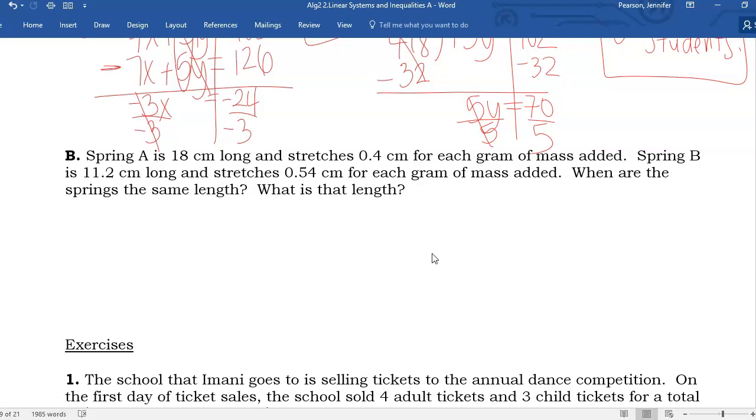This reads Y equals MX plus B because we have a starting number and we have a rate of change. For spring A, I think I'll just go X and Y again. You can do like M for mass and S for spring or L for length, but I'm going to just stick with X and Y. So, the length of spring A starts at 18 centimeters.